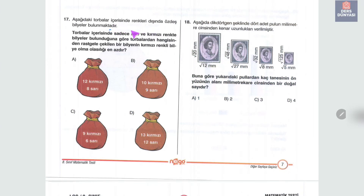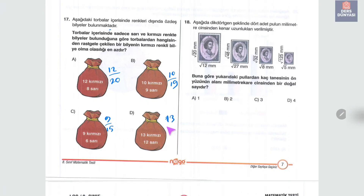On yedinci soruda torbada sadece sarı ve kırmızı bilye var. Kırmızı seçilme olasılıkları: 12/20, 10/19, 9/15, 13/25. Yarıyı geçip geçmediğine bakıyoruz: 12/20=0,6; 10/19≈0,53; 9/15=0,6; 13/25=0,52. En az olan 13/25'tir.